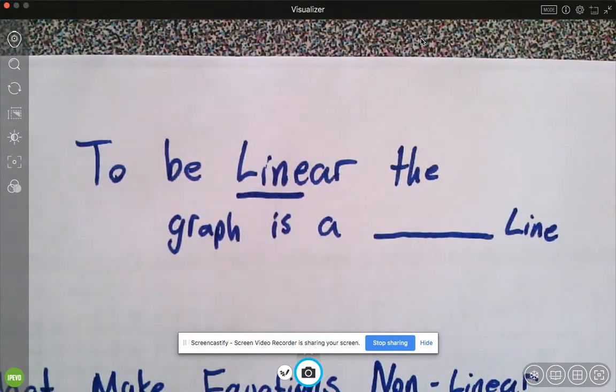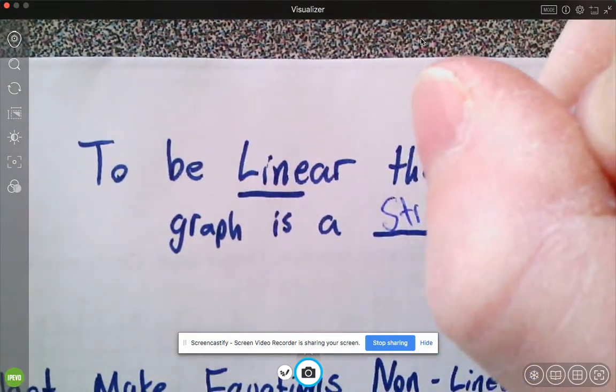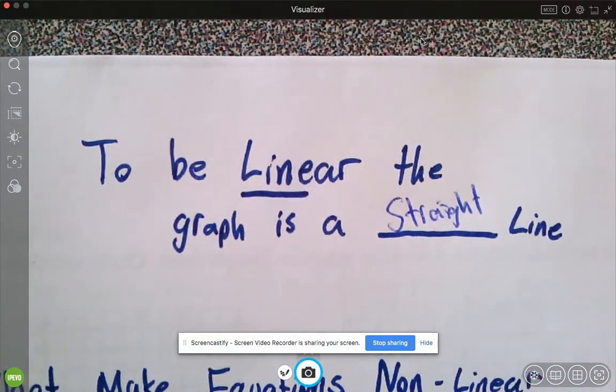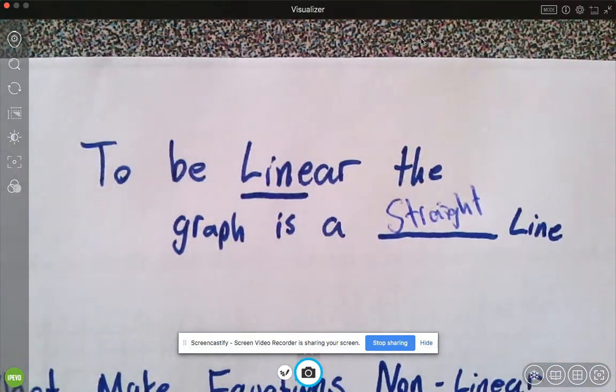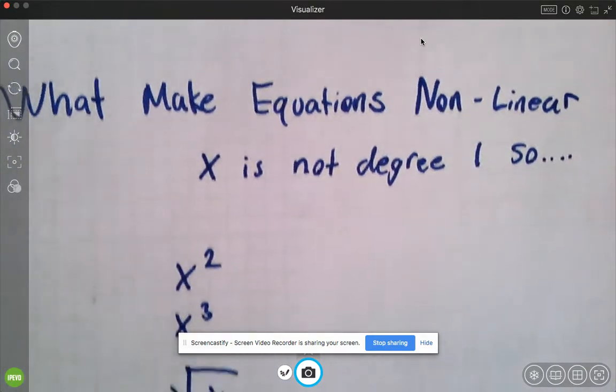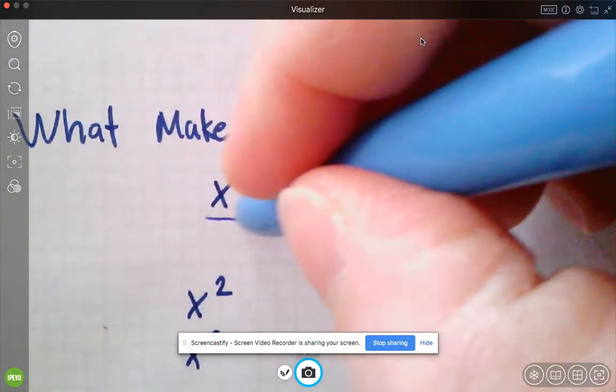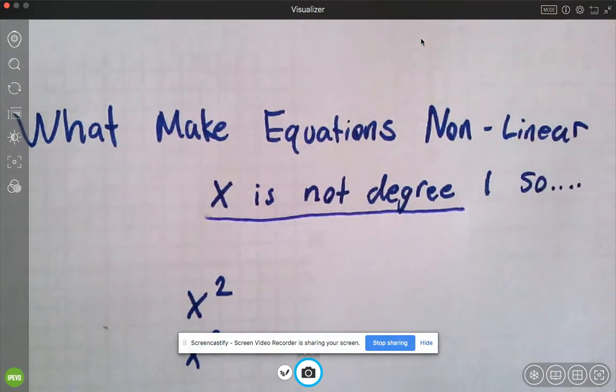So keeping that in mind, I wanted to look more at why some of these equations do not produce straight lines. So what makes equations nonlinear? Like Jimmy Chang said yesterday, it means it's not degree one.